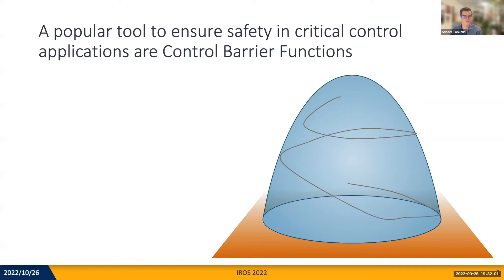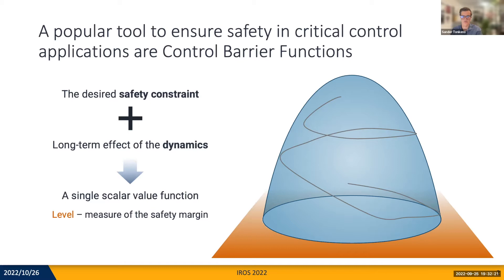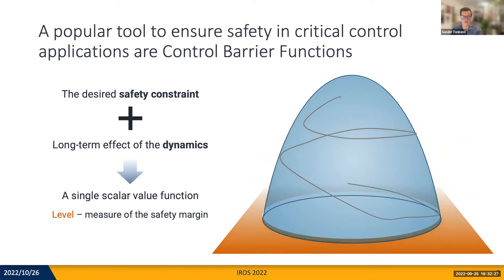A popular tool to ensure safety in critical control applications are control barrier functions. They aim to capture a desired safety constraint along with the long-term effect of the system dynamics in a single value function. Its value, or level, measures the margin we have to unsafety, with zero being the boundary. So as we move up the value function, we have a higher safety margin, whereas we decrease the margin when taking a lower slice.